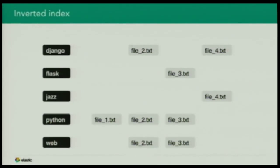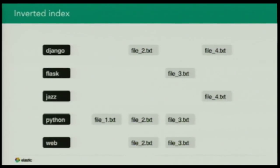Notice that the words are sorted. For each of these words, we have a sorted list of documents, files, or pages where these words actually exist. We also have some additional information stored there — for example, how many files actually contain the word Python, how many times it appears in a given file, and at what positions. Those statistics will be very important as we go on through this talk.